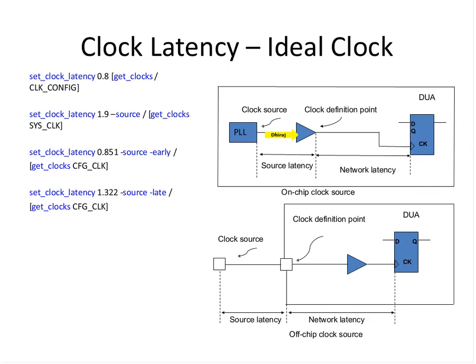For an off-chip clock source — very common for interfaces like I2C, SPI, and other chip-level interfaces where the clock comes from a different chip or a clock source situated off-chip — things remain the same. The time from the clock source to the clock definition point is called source latency; network latency is what is inside the design. Network latency is the latency within the scope of a design; source latency is something outside of a design. The commands use minus_source or minus_network to define each type. If you do not give anything, by default it is treated as network latency.